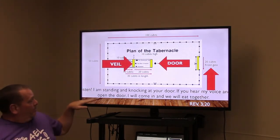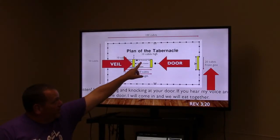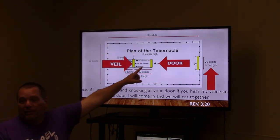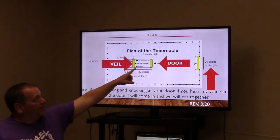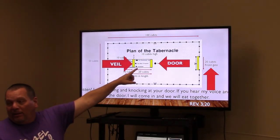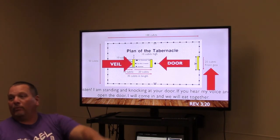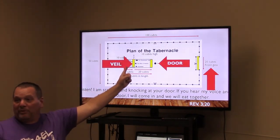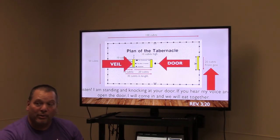Revelation 3:20 says he's standing and knocking at the door — if you hear his voice and open the door, he will come in and they will eat together. Everything in the New Testament relates back to the Old Testament, and the tabernacle is the key to it all.